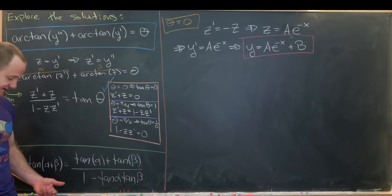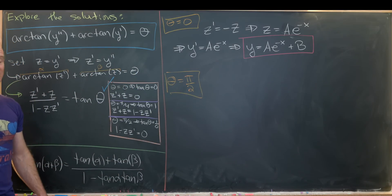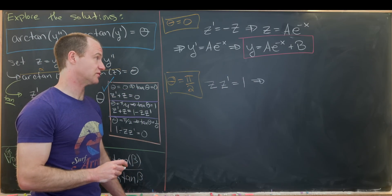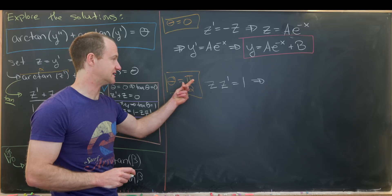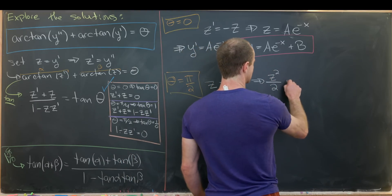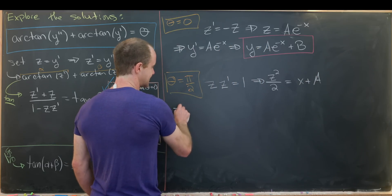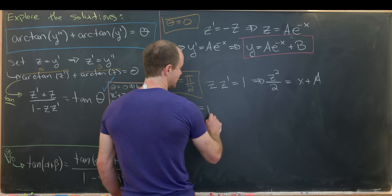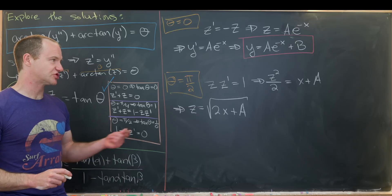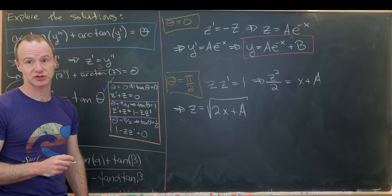Now let's look at the third case, θ = π/2, which gives 1 − z·z' = 0, i.e., z·z' = 1. This is integrable: integrating the left side gives z²/2 and the right side gives x + a constant, so z²/2 = x + a, which means z = √(2x + a), absorbing the factor of 2 into the arbitrary constant.